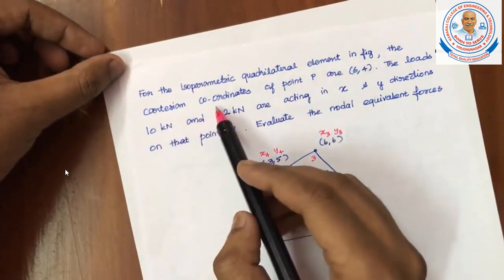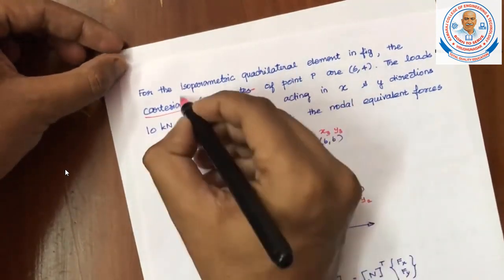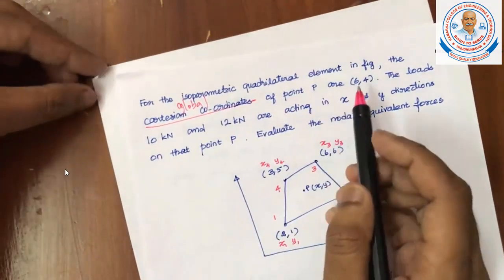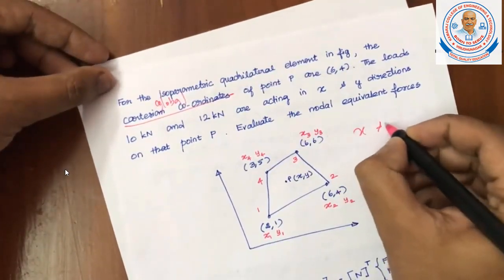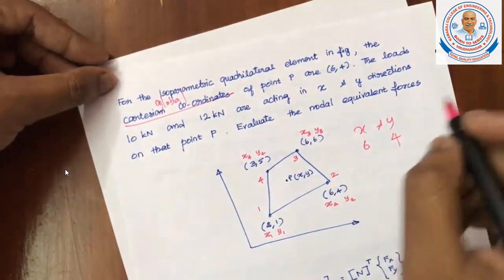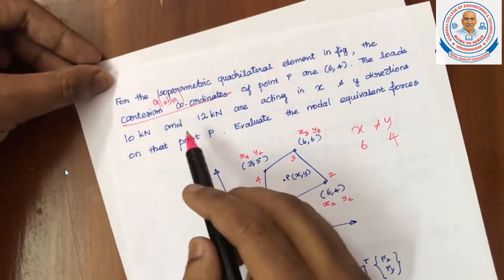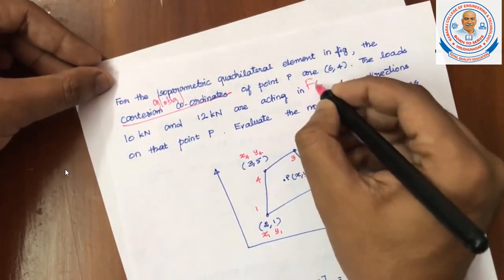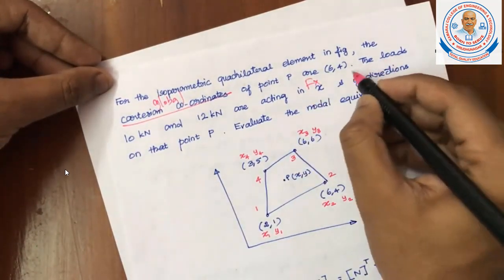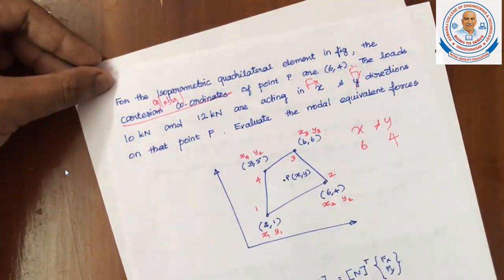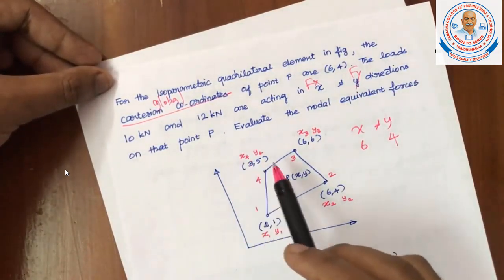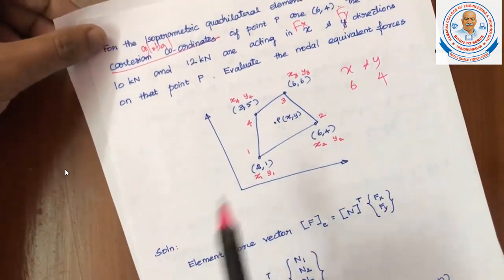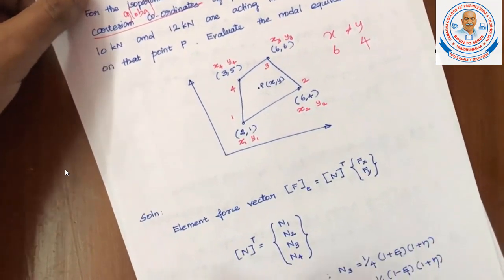Isoparametric coordinates and the Cartesian coordinates are given. Cartesian coordinates is nothing but global coordinates. Point P is given in terms of X and Y, that is the Cartesian coordinates. The loads are given, two loads: one is 10 in terms of X and Y, so X in the Fx, Y in the Fy. Both are given. For a point loaded, evaluate the nodal equivalent forces. We need to calculate the nodal force vector. This is the given problem.